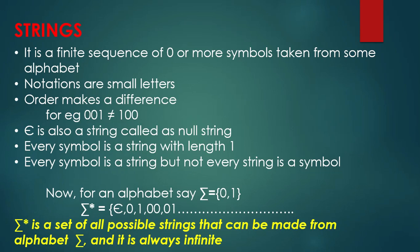Epsilon is also a string, called the null string. If you do not have any visible string, we call that string null — that means epsilon. Every symbol is a string with length 1. For example, 'a' is also a string and its length is 1. Every symbol is a string but not every string is a symbol. For example, 'abc' is not a symbol — it is a string. But a single symbol, like 'a' or 'b', is always a string.